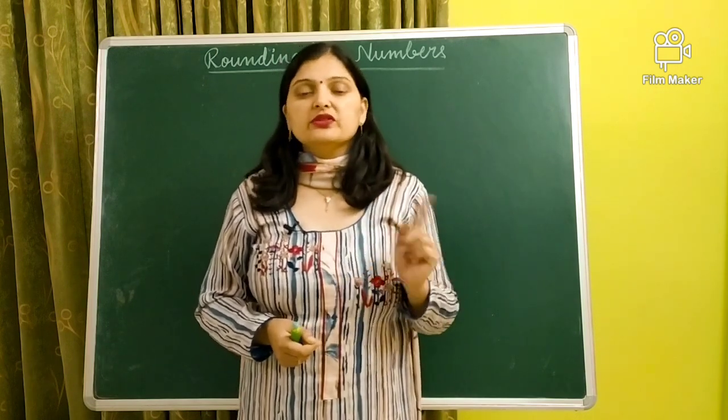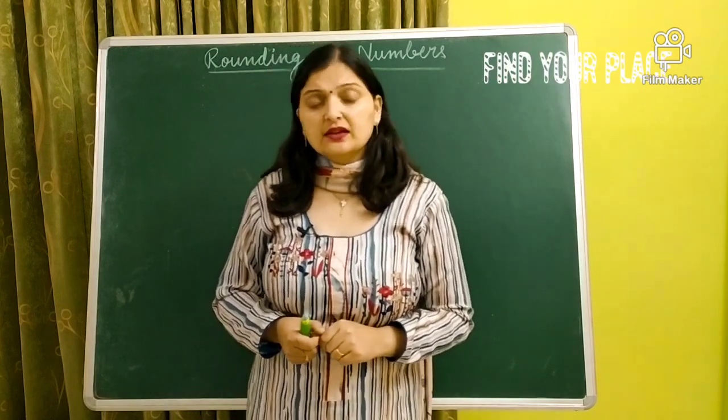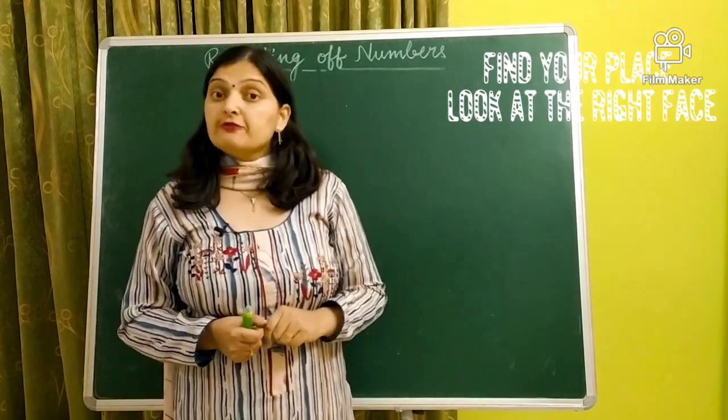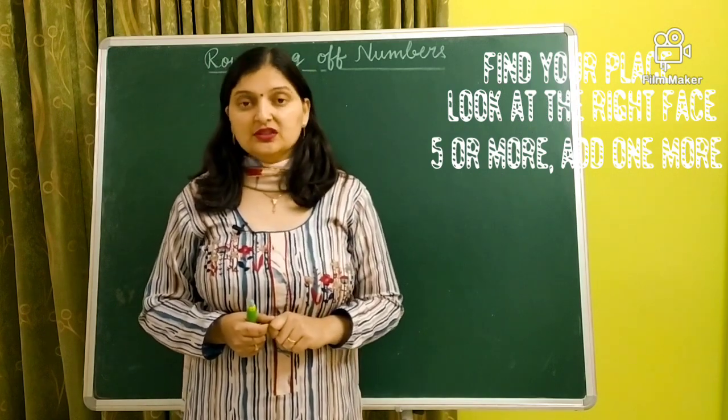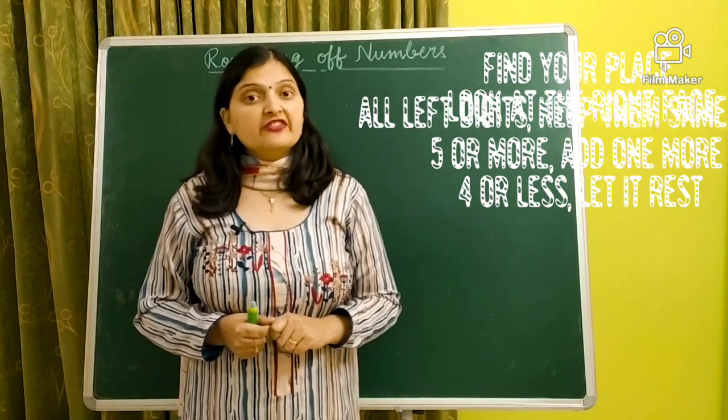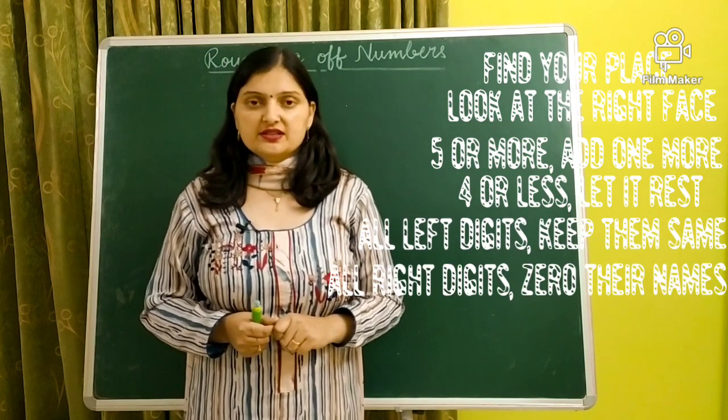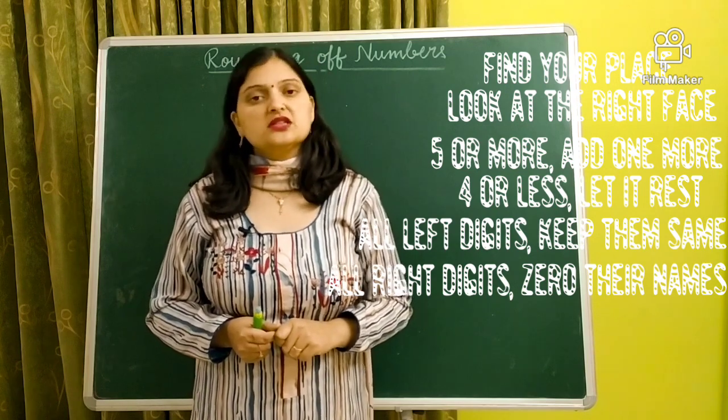Let us revise that poem and then we will start with our topic. Find your place, look at the right face. Five or more, add one more. Four or less, let it rest. All left digits, keep them same. All right digits, zero is their name.